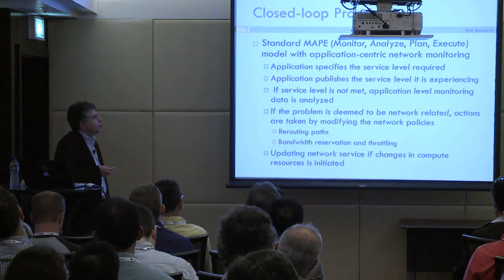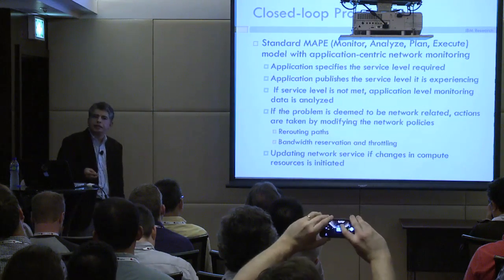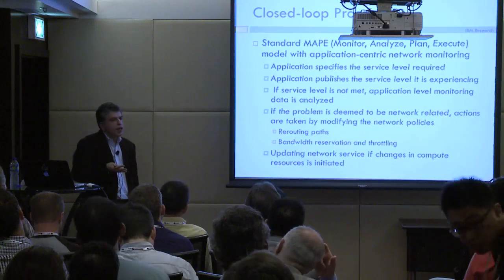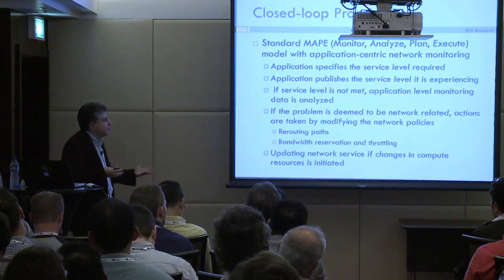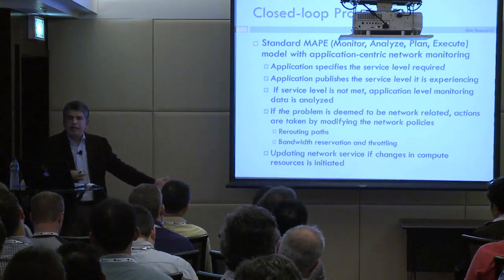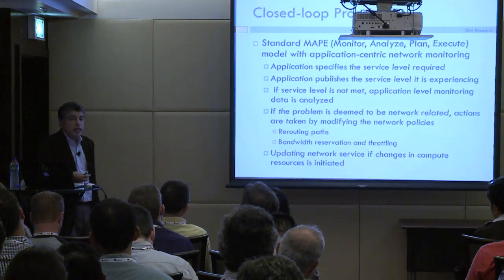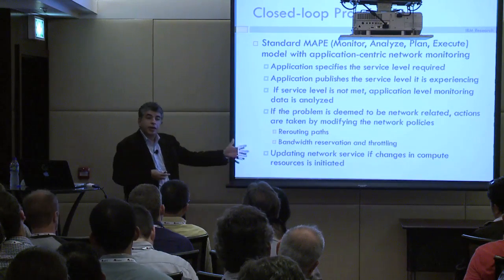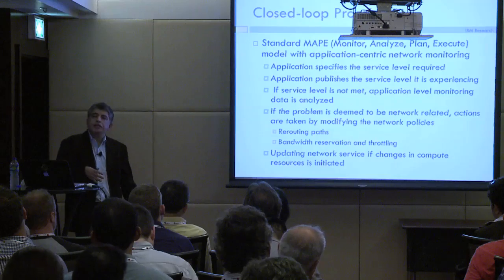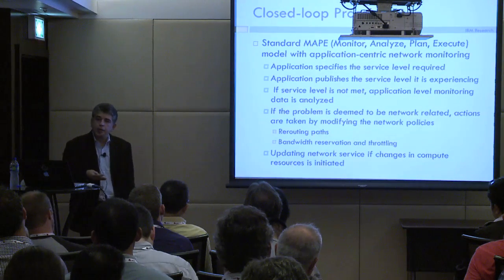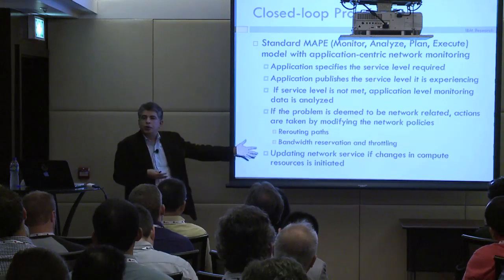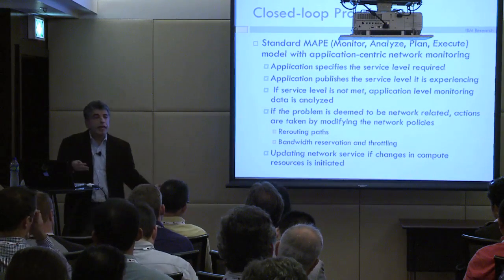In the standard closed-loop approach, applications specify the service level they require and publish the service level they are experiencing. If the required service level is not being met, you can react. If the problem is the network, that could lead to changes in networking — providing higher bandwidth reservation or changing routes. Indirectly, during the analyze phase of your closed loop, you might realize you need to instantiate more VMs as web servers, which could lead to changes to your load balancer so it is aware of the new VM and can direct traffic to it.